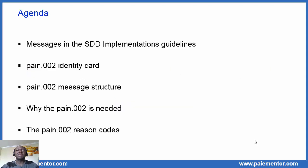I will first give you an overview of all the messages exchanged in the SDD core and B2B schemes. Then we will see which parties exchanged the PAYING 2. Then we will look at the PAYING 2 identity card — its name, when it was born, and its place of residence. After the identity card, we will talk about the PAYING 2 message structure and building blocks, why the PAYING 2 message is needed, and I will end with a focus on PAYING 2 reason codes.